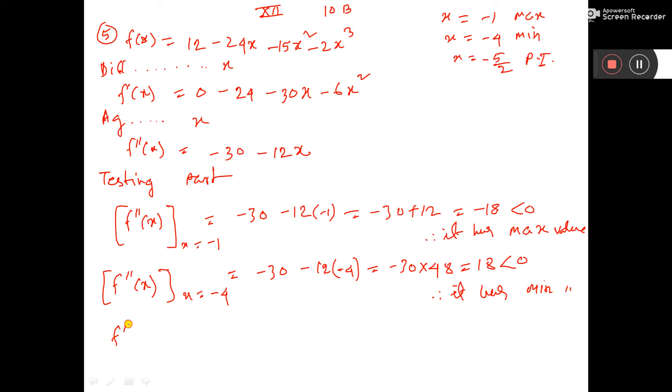And the last one testing, f''(x) at the point x equal to -5/2 is equal to -30 - 12(-5/2). So, 6 twos are... so it is coming -30 + 30, that is equal to 0. So,